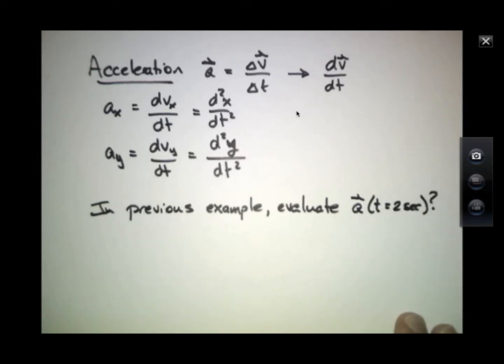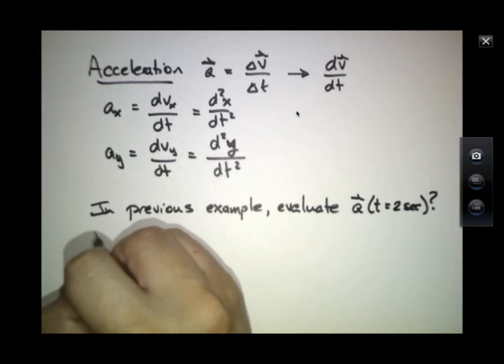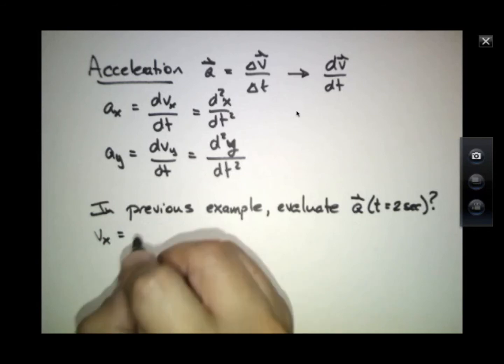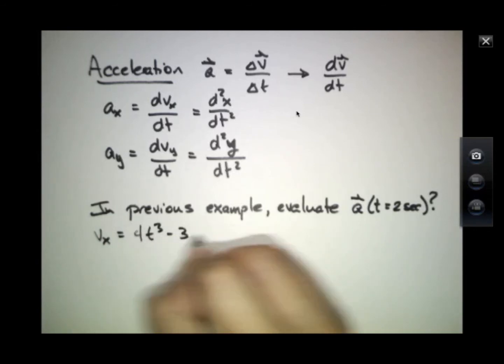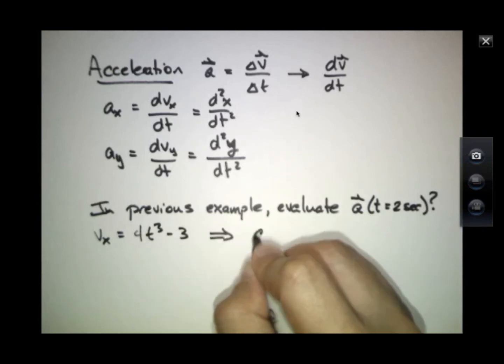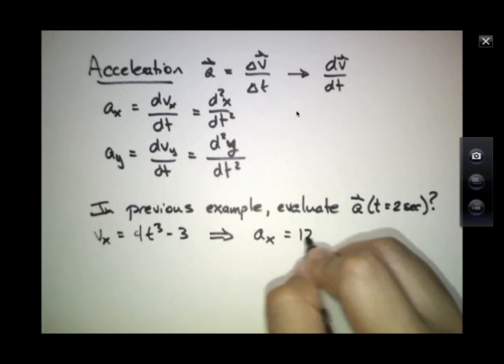So in our previous example, we could try to evaluate what's the acceleration at time t equals 2 seconds. Well, let's remember that v_x is 4t³ - 3. And that means that a_x, which will be the time derivative of this, would be 12t².